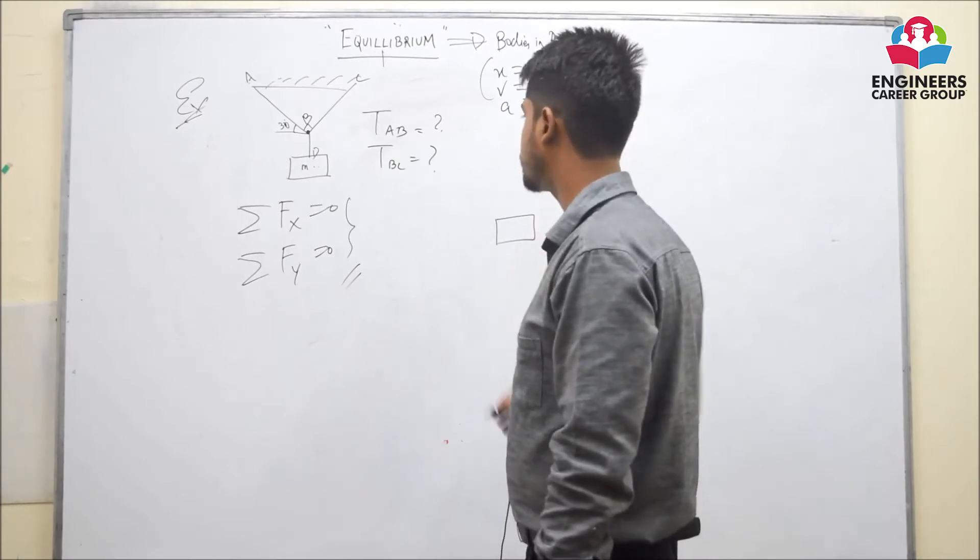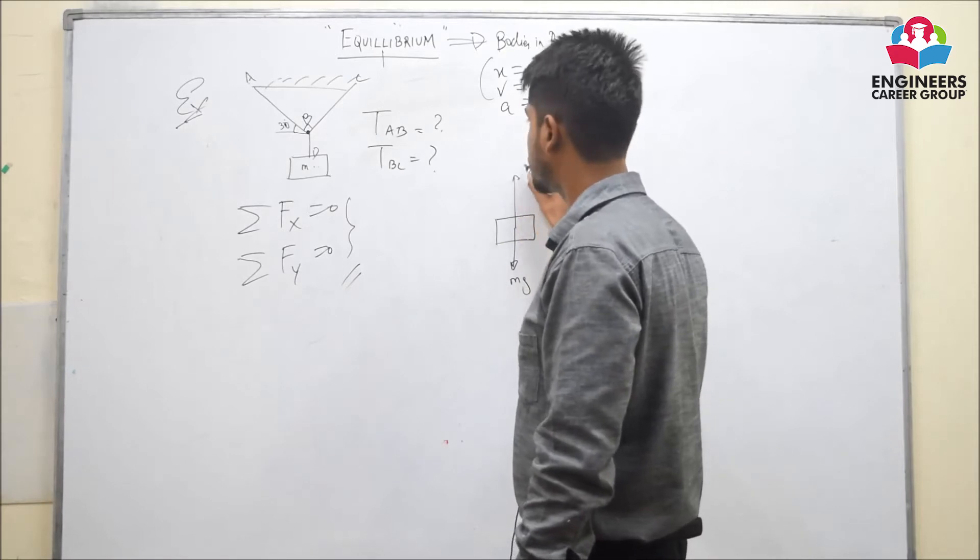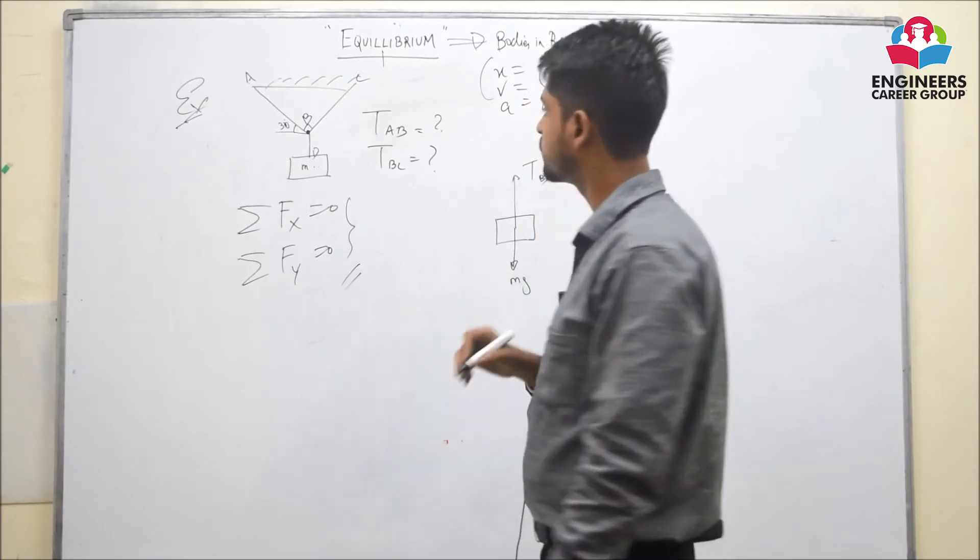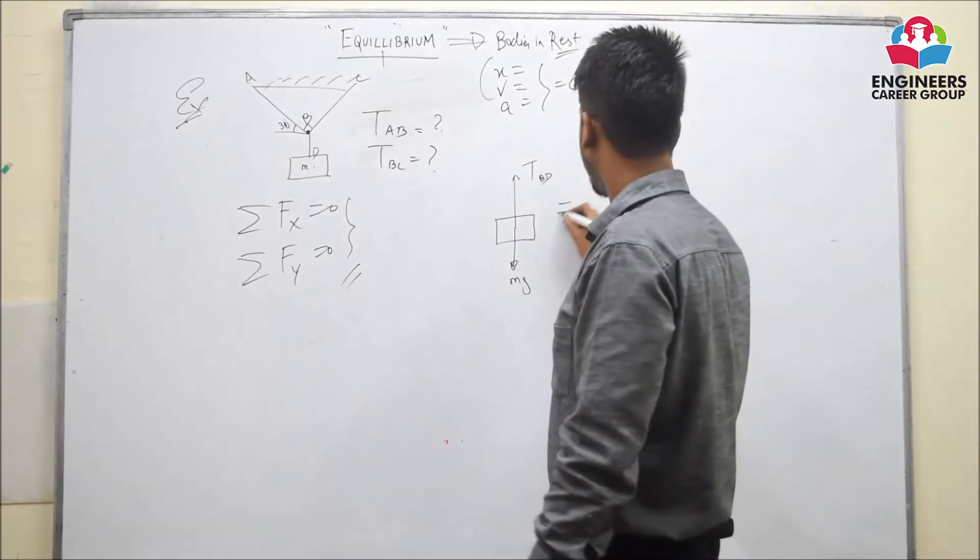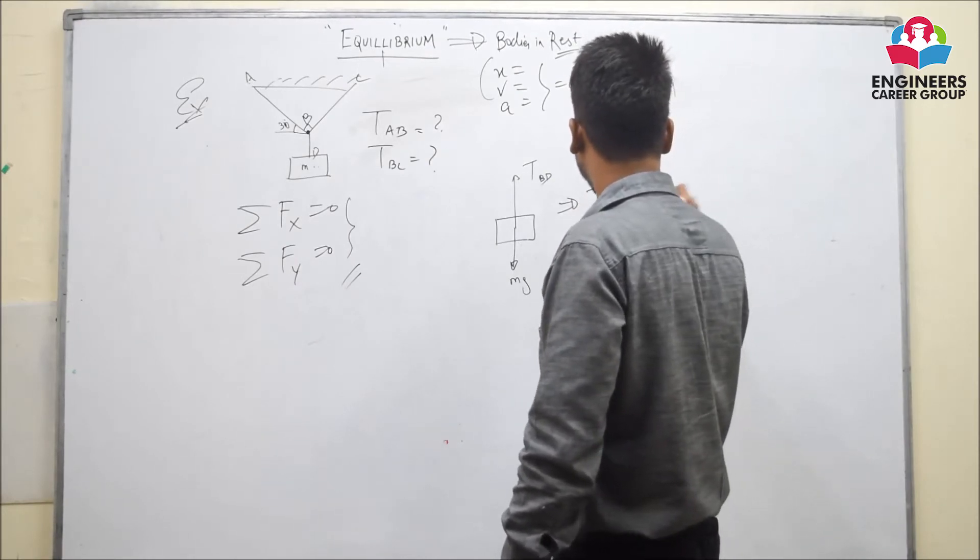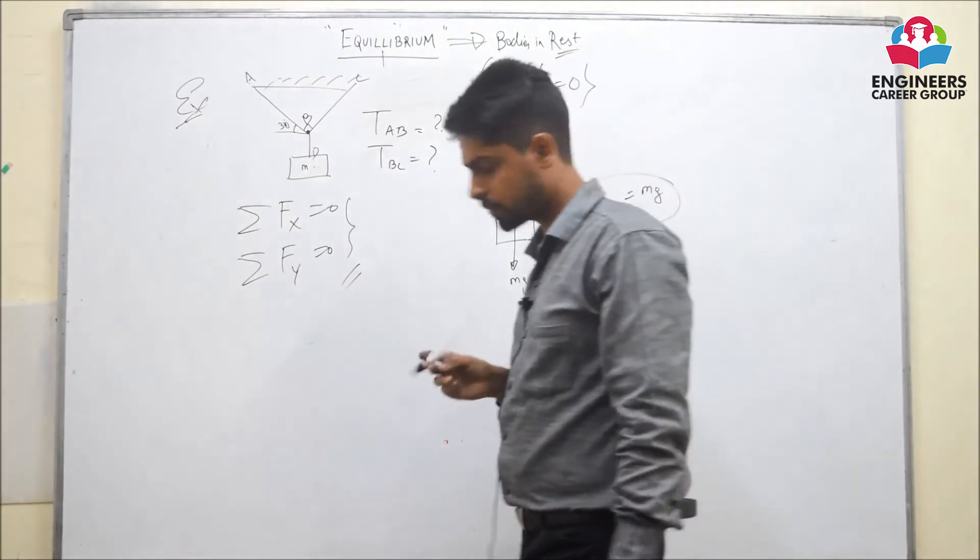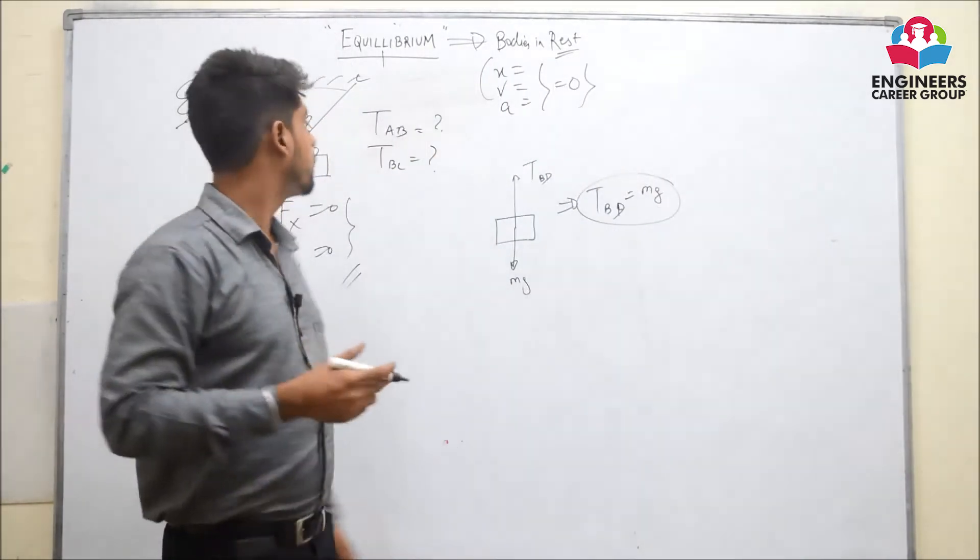This is a mass M and this is tension T in BD. Now it is clear that tension T in BD is equal to Mg. Now, after that what are the next steps?